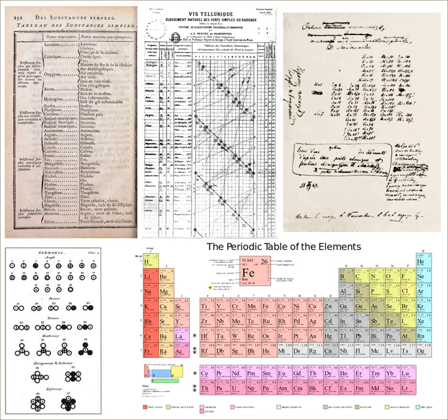The elements which are the most widely diffused have small atomic weights. The magnitude of the atomic weight determines the character of the element, just as the magnitude of the molecule determines the character of a compound body. We must expect the discovery of many yet unknown elements — for example, elements analogous to aluminium and silicon, whose atomic weight would be between 65 and 75. The atomic weight of an element may sometimes be amended by a knowledge of those of its contiguous elements. Thus the atomic weight of tellurium must lie between 123 and 126, and cannot be 128. Certain characteristic properties of elements can be foretold from their atomic masses.